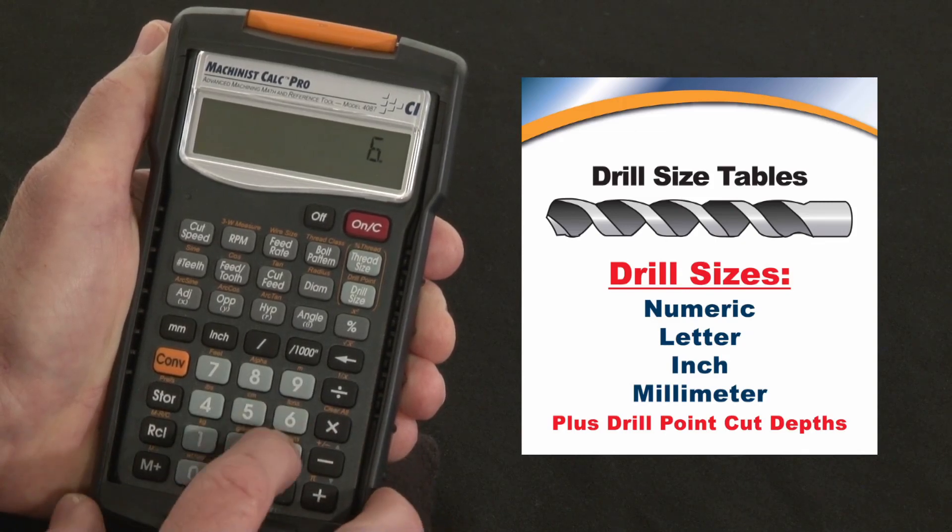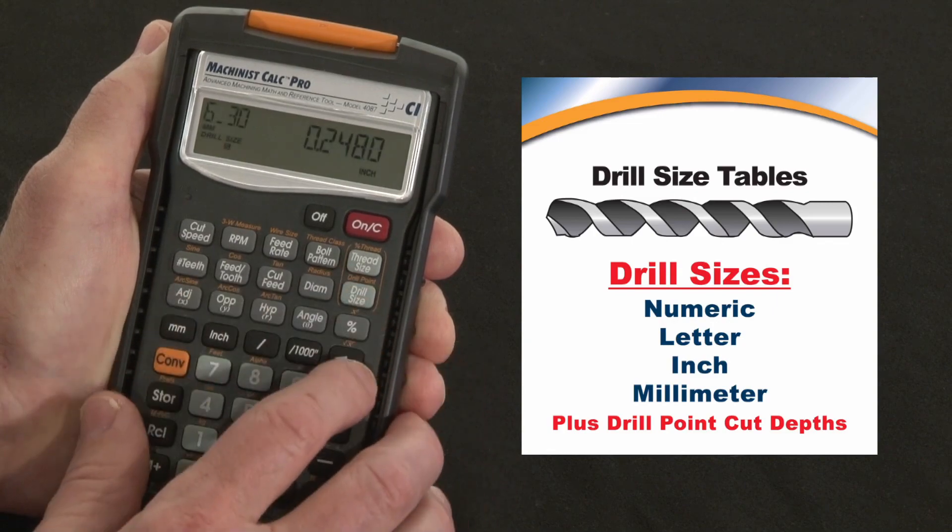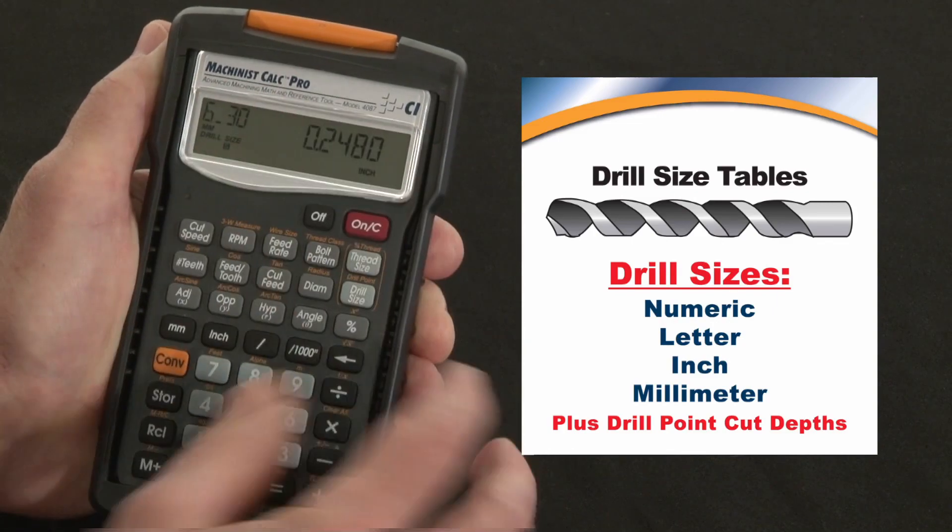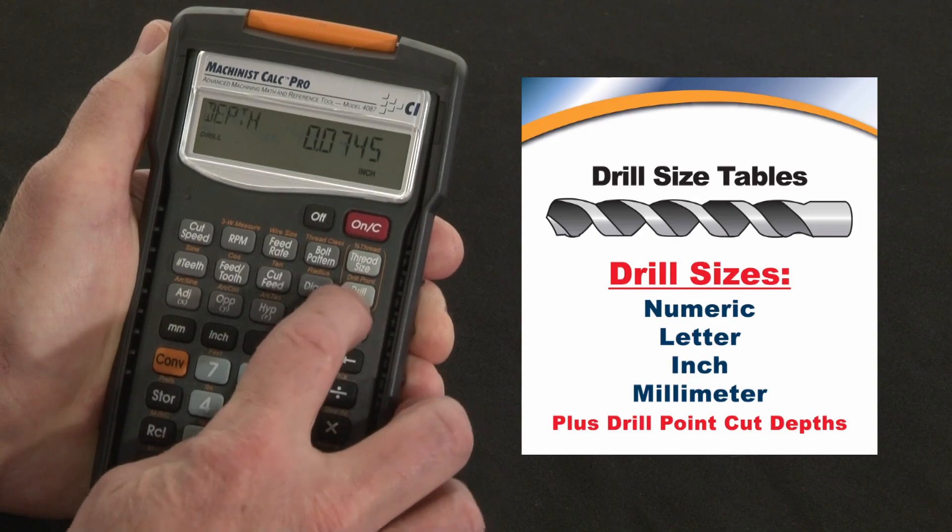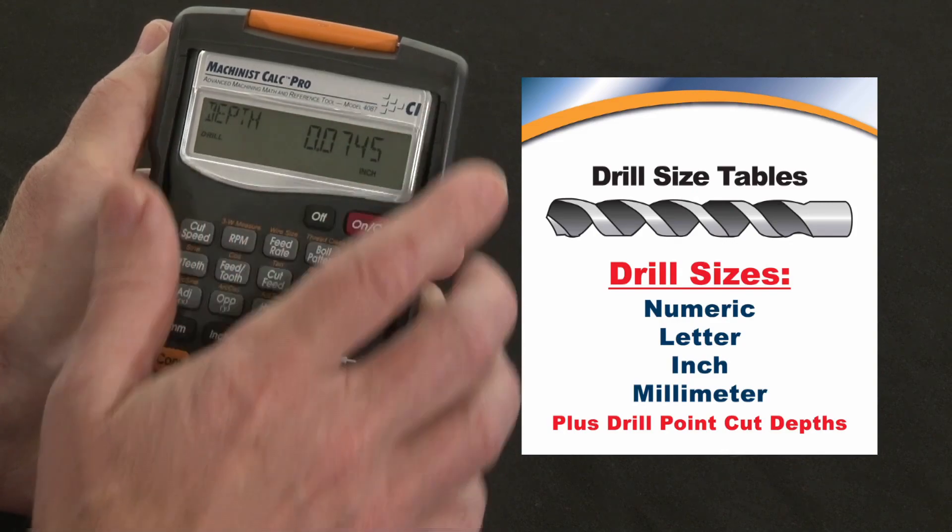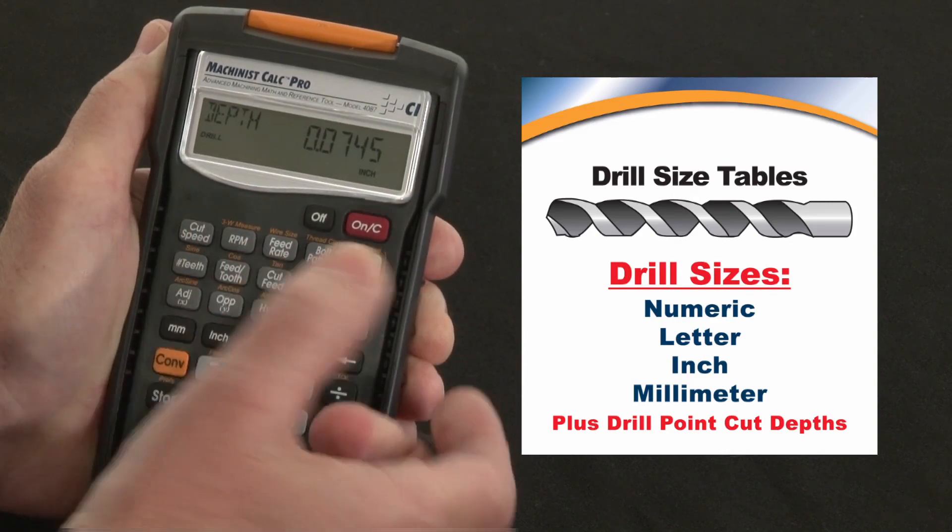So let me put in 6.3mm as my drill size, and say we want to over drill. Well, we need to get full depth. Convert to drill point. So we need to go over 75 thousandths roughly to accommodate that tip.